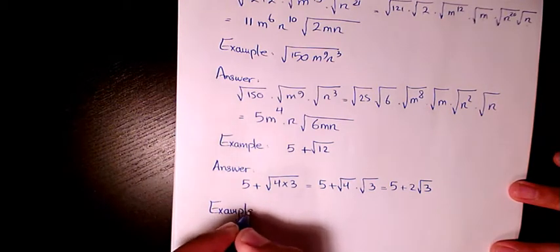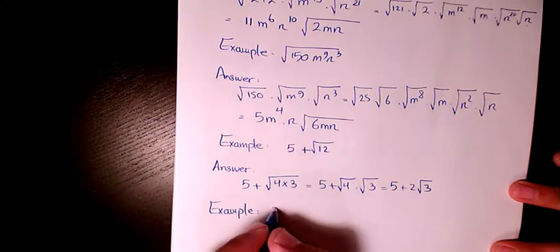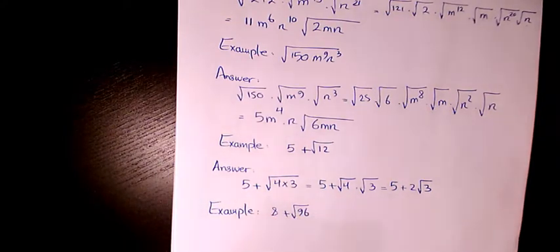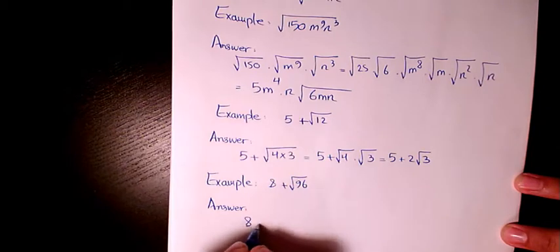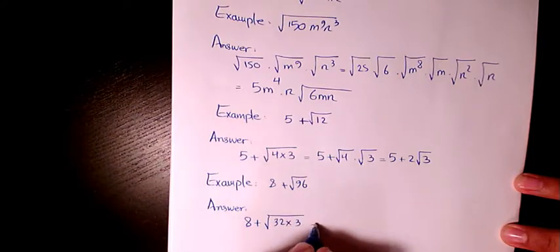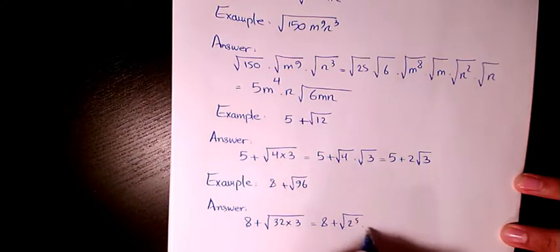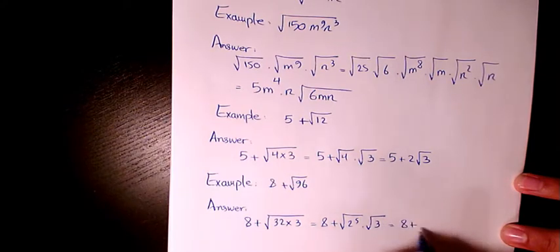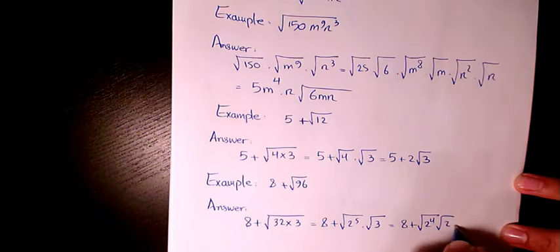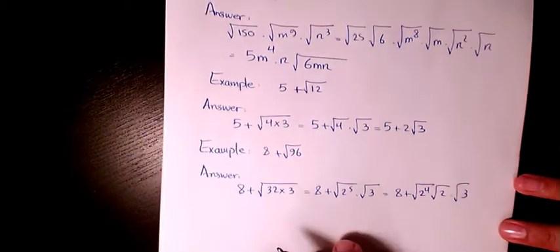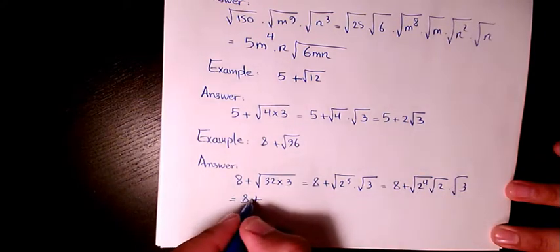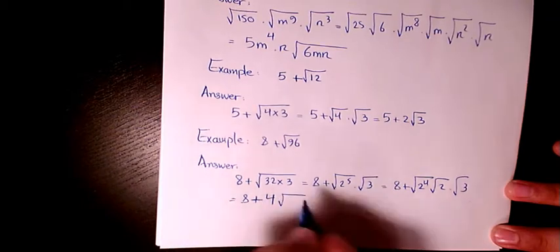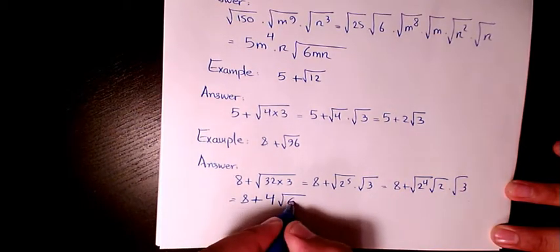The next example is 8 plus the square root of 96. 96 is 32 times 3, and 32 is 2 to the power of 5. So we have 8 plus the square root of 2 to the power of 5 times 3, which becomes 8 plus the square root of 2 to the power of 4 times 2 times 3. The square root of 2 to the power of 4 is 2 squared which is 4, and the square root of 2 times 3 is the square root of 6. So the simplified form is 8 plus 4 root 6.